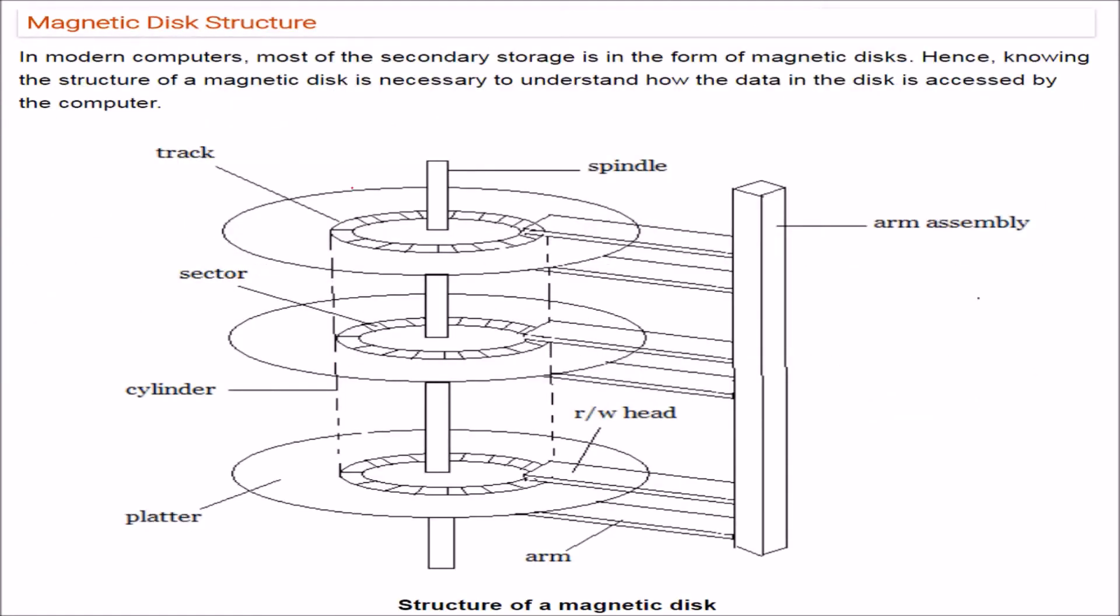This is the disk structure if you are using electromechanical devices, the hard drive. Most of the secondary storage is in this form. So the structure of magnetic disk we must understand, how the data is kept, how it has to be accessed, because in purview of operating system we need to know all these.